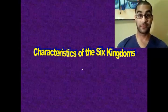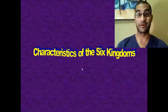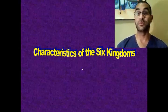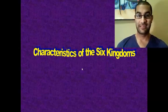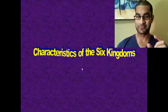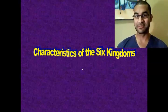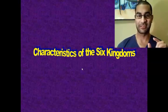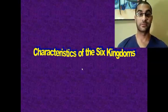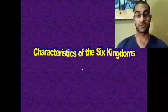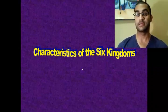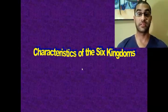Back in my day when I went to high school, we actually only had five kingdoms. Bacteria and Archaea, the two prokaryotic kingdoms, were combined as one kingdom called Monera. Since then, things have changed, and now we have six kingdoms. We're going to walk through this video discussing each of those kingdoms and their unique characteristics.